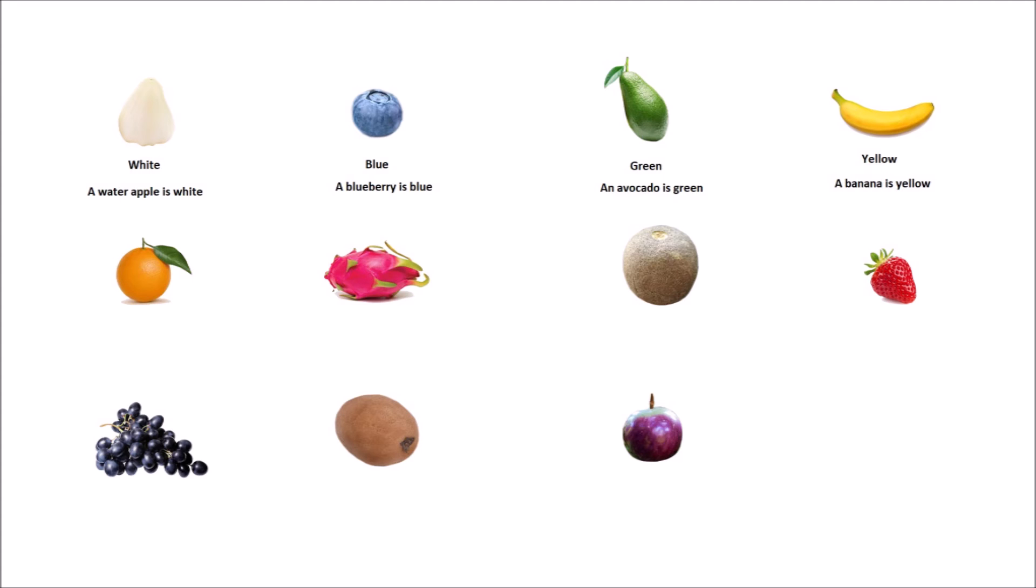Yellow, a banana is yellow. Orange, an orange is orange. Pink, a dragon fruit is pink.